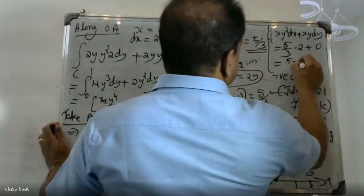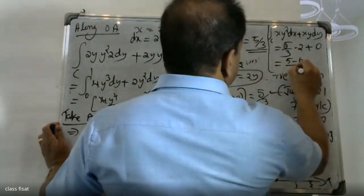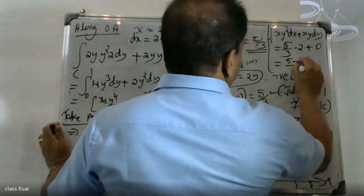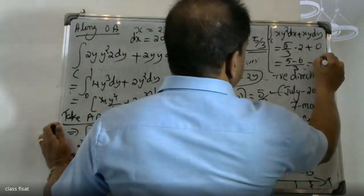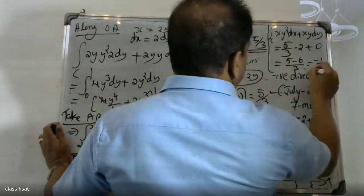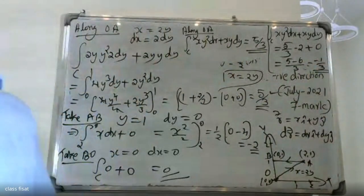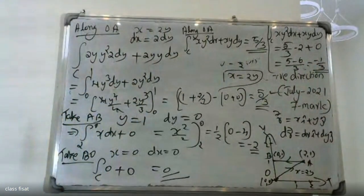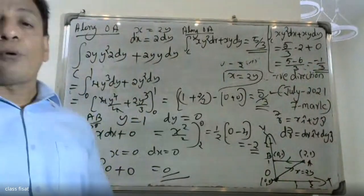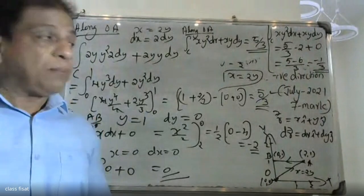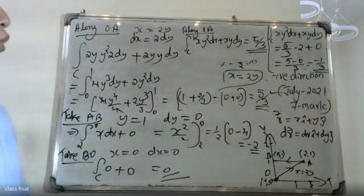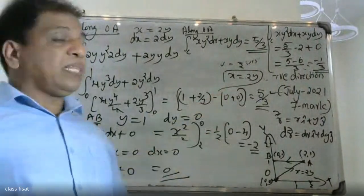The result is 5 minus 6, giving 5/3 minus 1. The answer for this segment is negative 1 over 3.